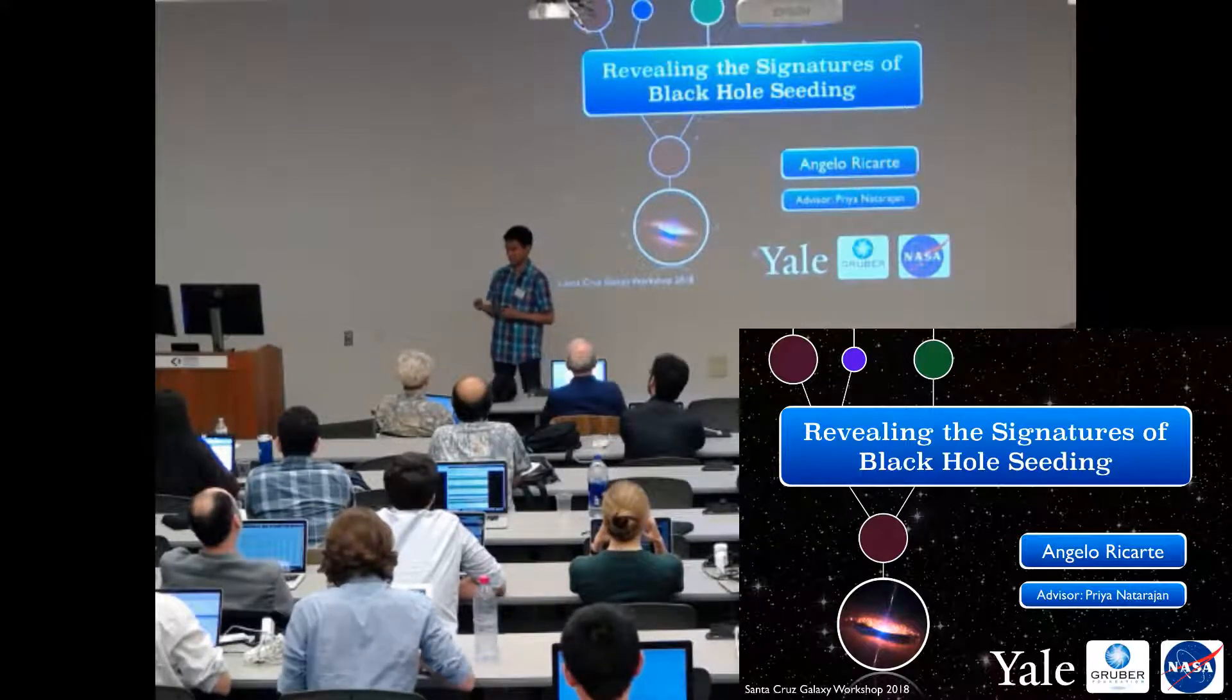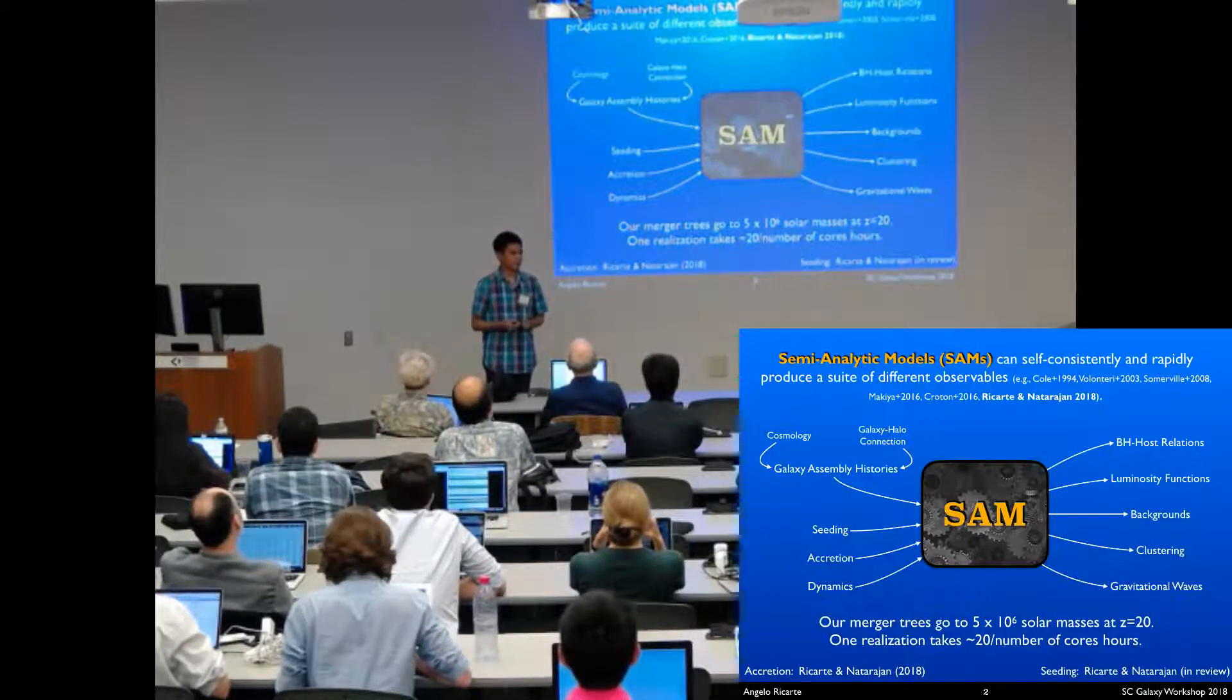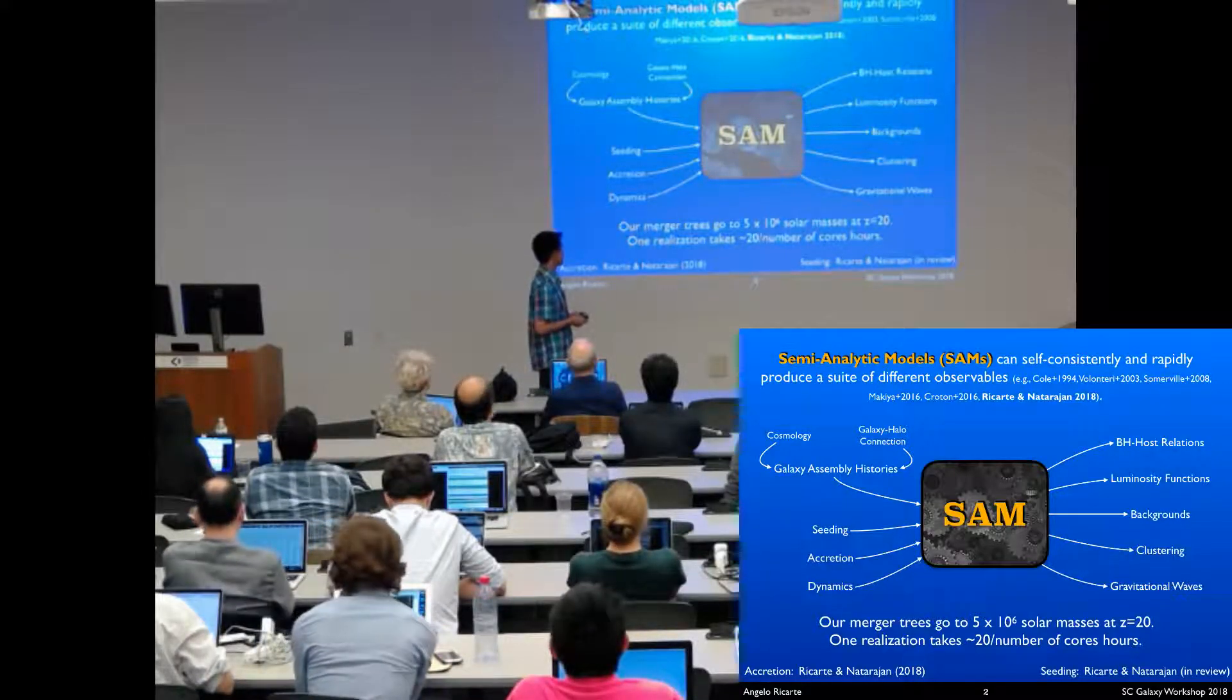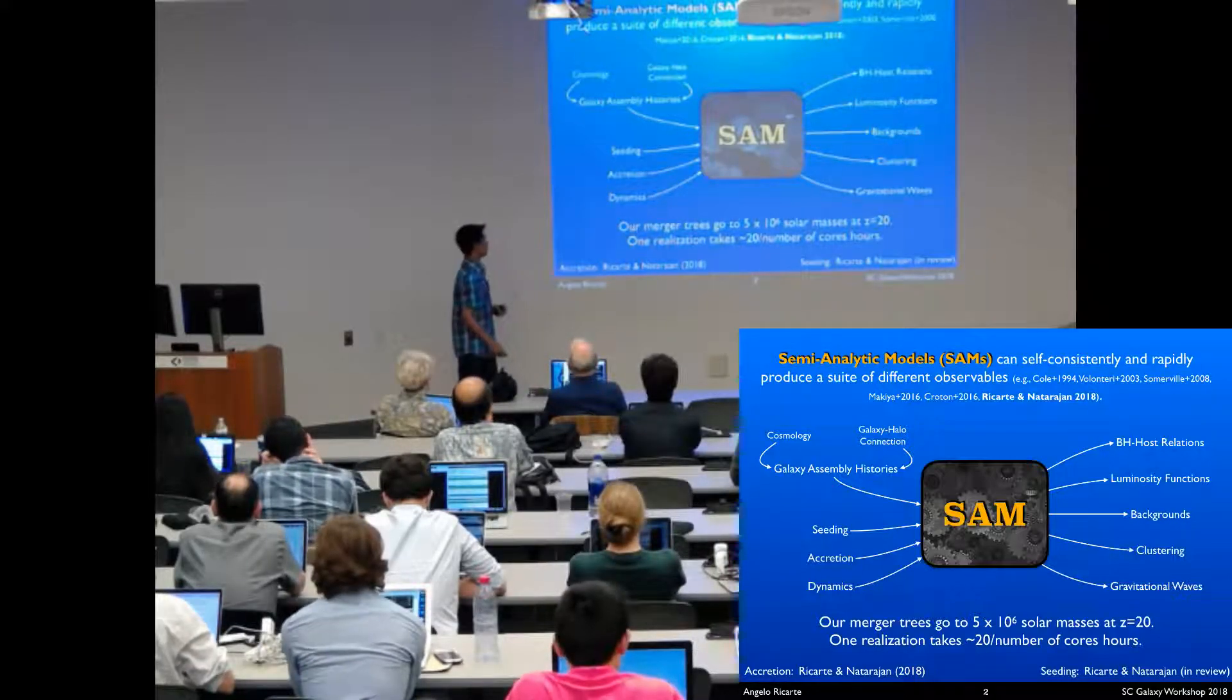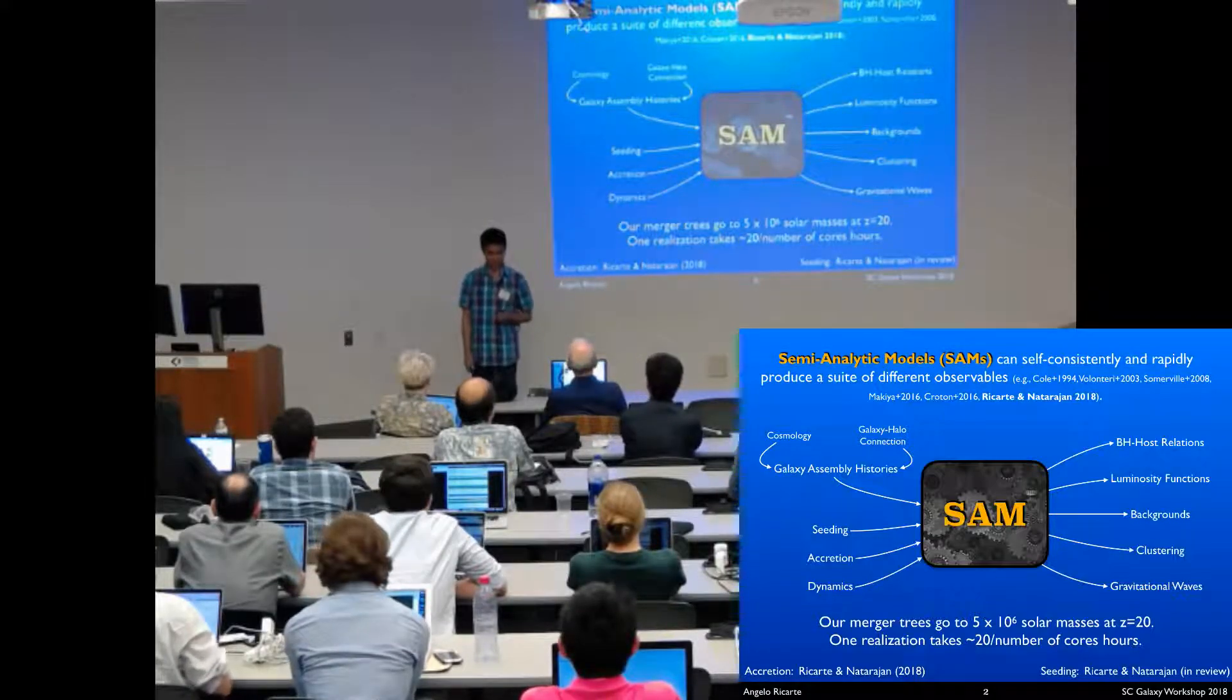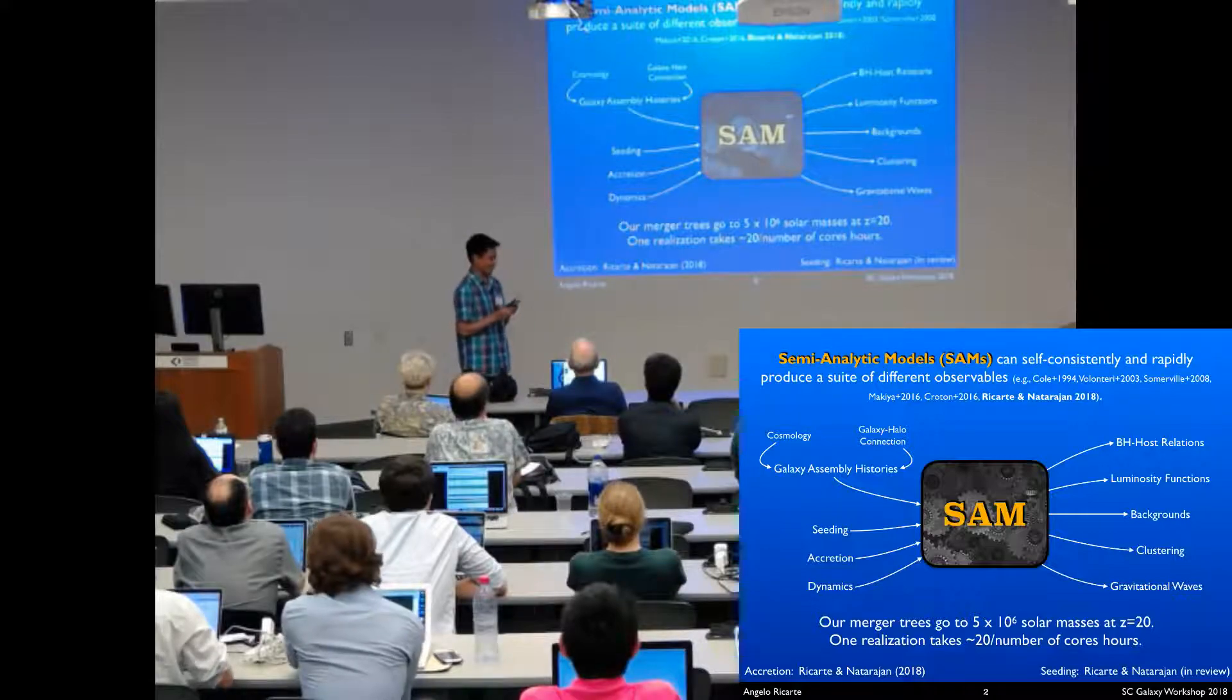Here we use semi-analytic models, which I've been developing as my thesis over the past few years. Semi-analytic models attempt to combine everything we know about formation and fueling of black holes to self-consistently and rapidly produce a suite of different observables. I take the galaxy part of the model from current empirical modeling, using the abundance matching results from Moser et al. 2013.